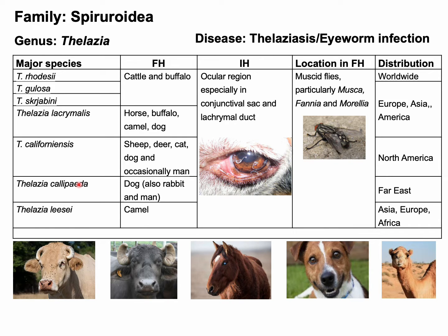Telagia calipeda is also observed under the nictitating membrane of the eye of dog. The intermediate hosts for these parasites are different species of musca fly or house flies.